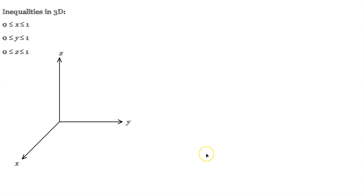Let's do another one here. 0 is less than or equal to y, which is less than or equal to positive 1, and 0 is less than or equal to z, which is less than or equal to 1. This is basically a block in three-dimensional space. So let me add a coordinate system and then let's graph this. First of all, this tells you that the value of x, y, and z ranges from 0 to 1 on each variable.